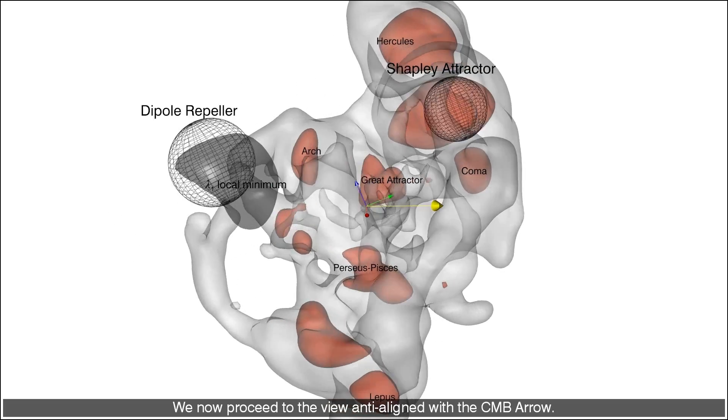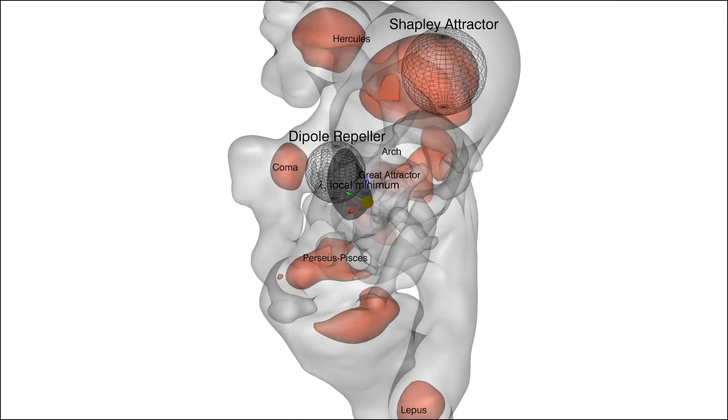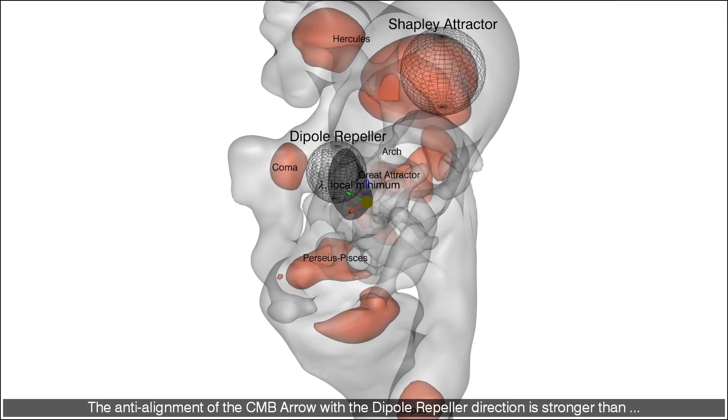We now proceed to the view anti-aligned with the CMB arrow. The anti-alignment of the CMB arrow with the dipole repeller direction is stronger than its alignment with the Shapley attractor.